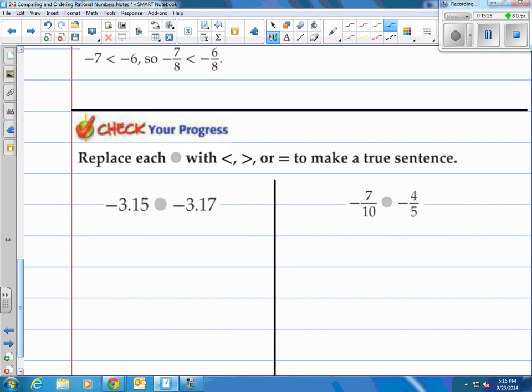All right, so negative 3.15 and negative 3.17. Well, I know on a number line, if I am looking at negative 3.15, I know that negative 3.16 is here and then negative 3.17 would be roughly there. So I know this one's to the right, this one's to the left, which means this one's bigger. This one gets eaten. There you go.